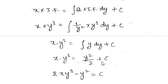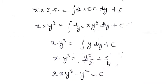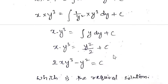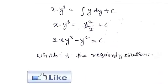Taking 2 as LCM, we can write 2xy³ - y² = c, where c represents the constant. This is the required solution for the given differential equation.